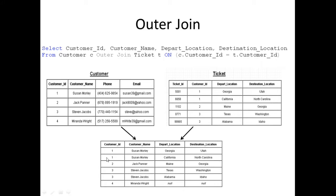The same thing goes for Jack Panner. His customer ID number is two and we also have a two here, so both records are going to be returned — Jack Panner going from Maine to Georgia. When we get to number four, Miranda Wright has a customer ID of four, but there is no customer ID four in the ticket table as a foreign key. So the only thing we're going to get from Miranda Wright is the first part of the record. Since the outer join returns all records, it's still going to return her record, but the values for depart location and destination location are going to be null.